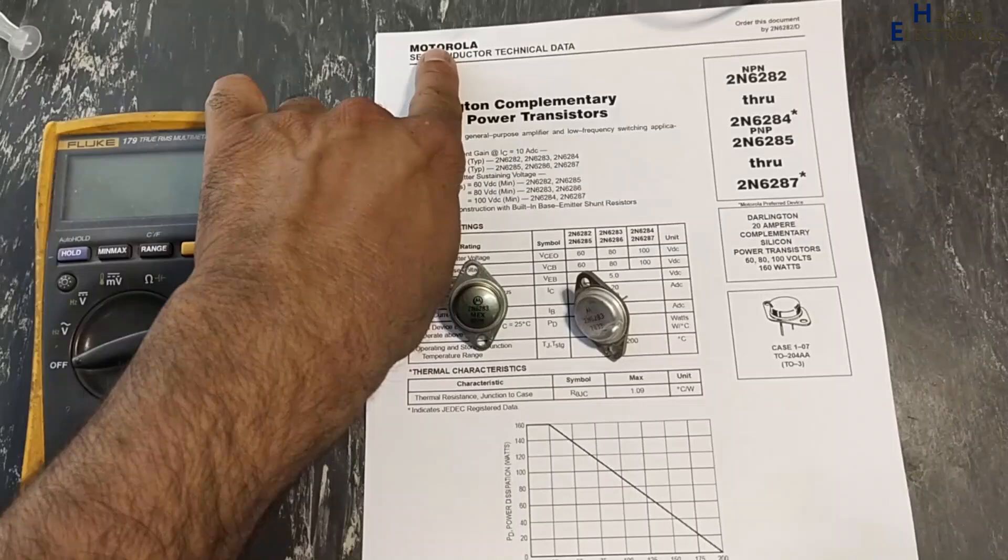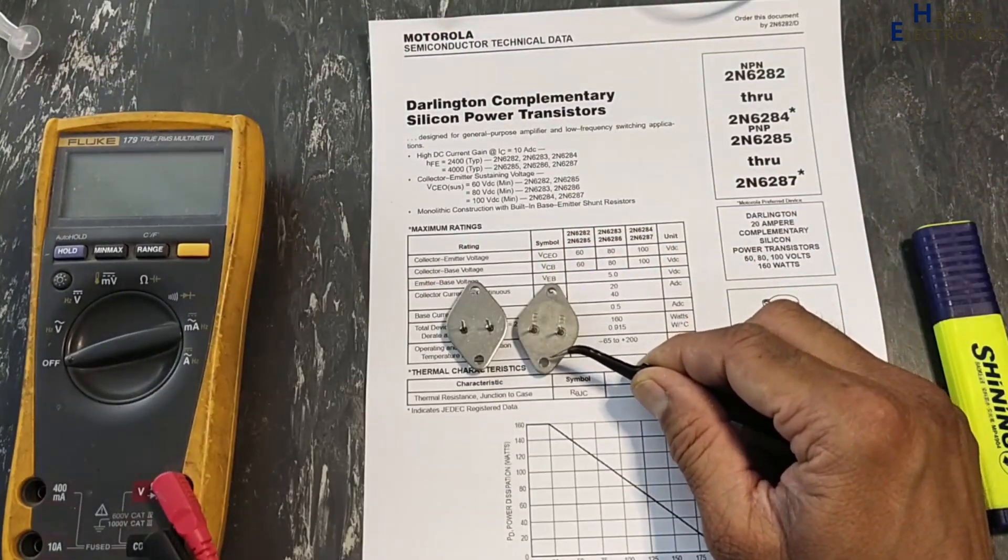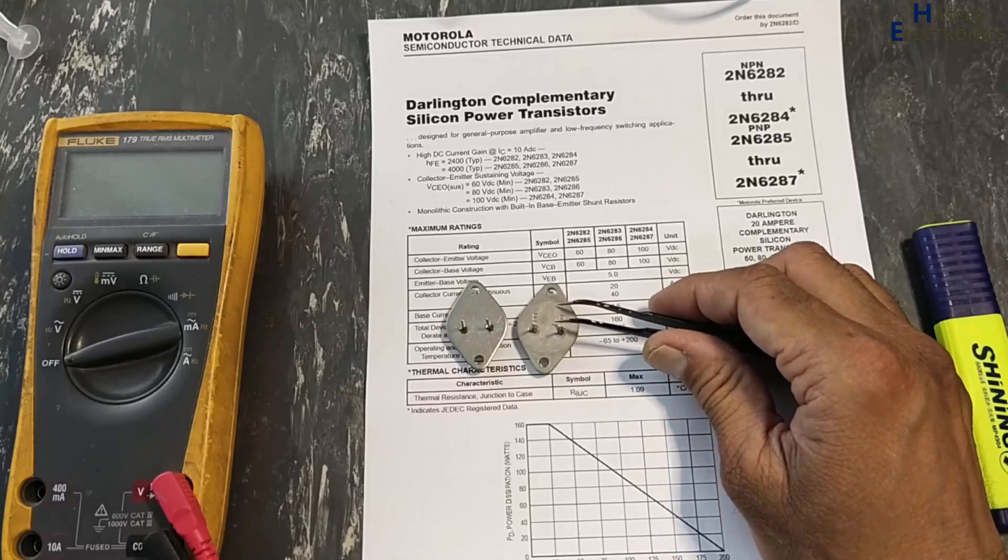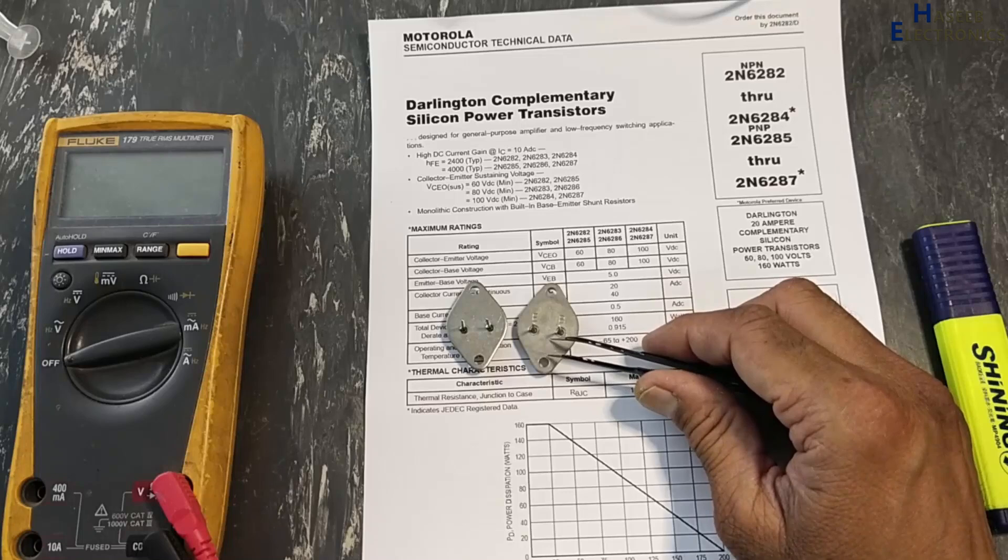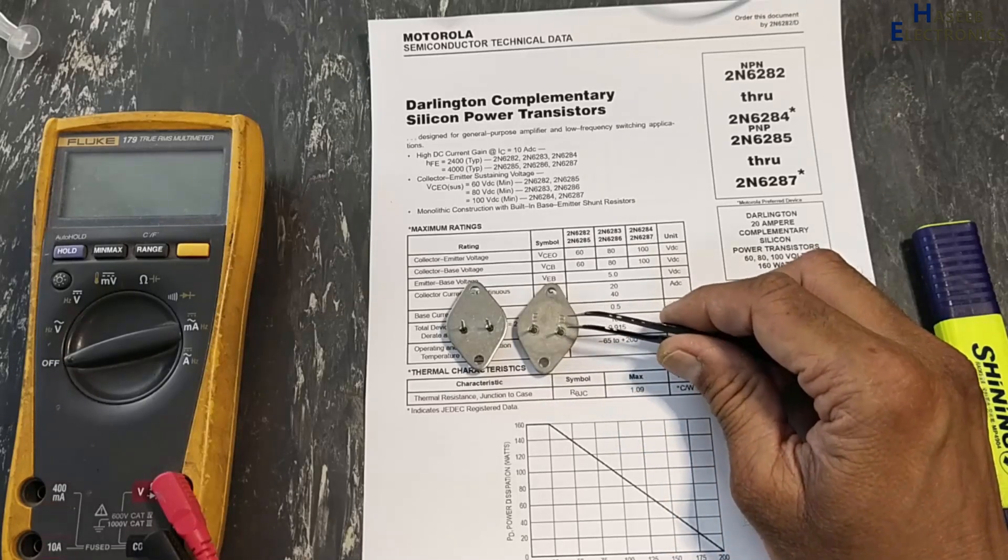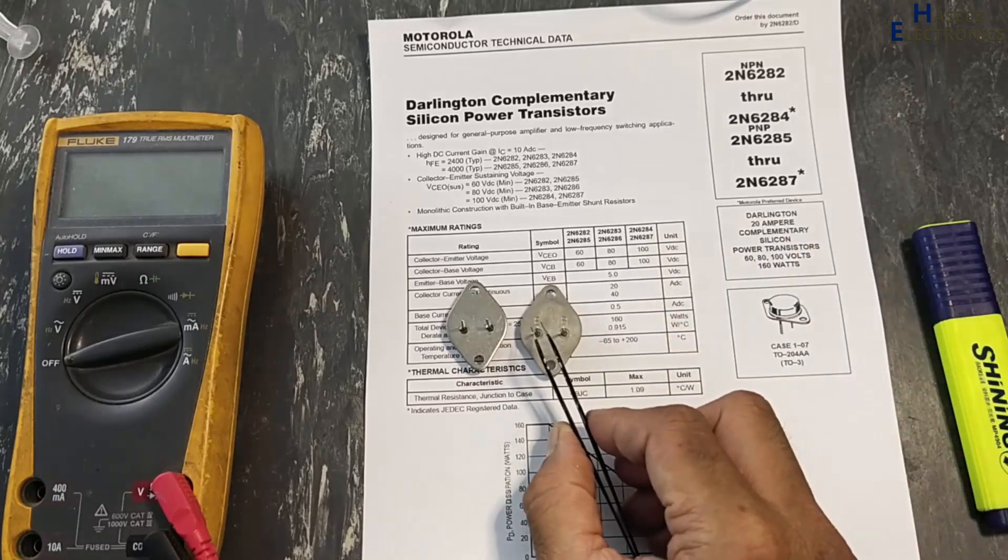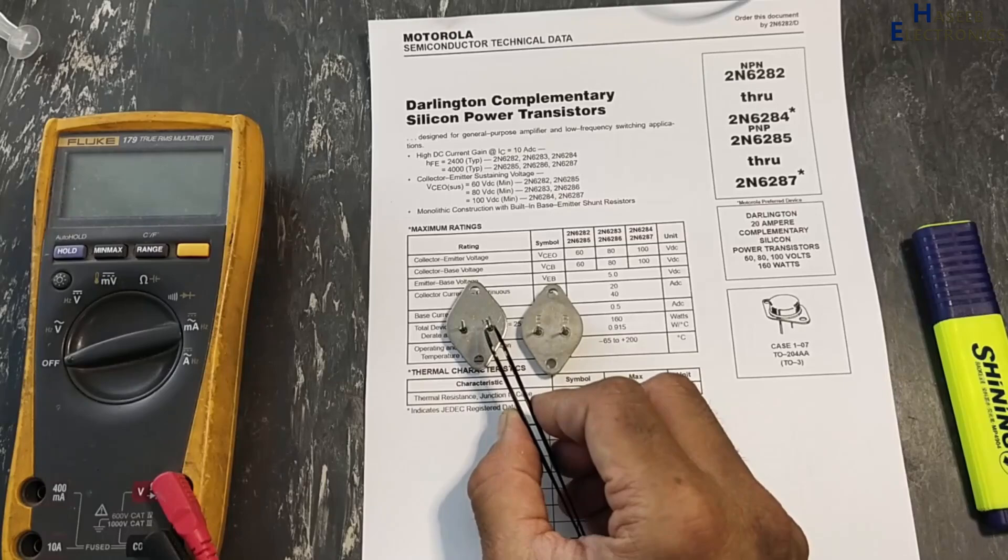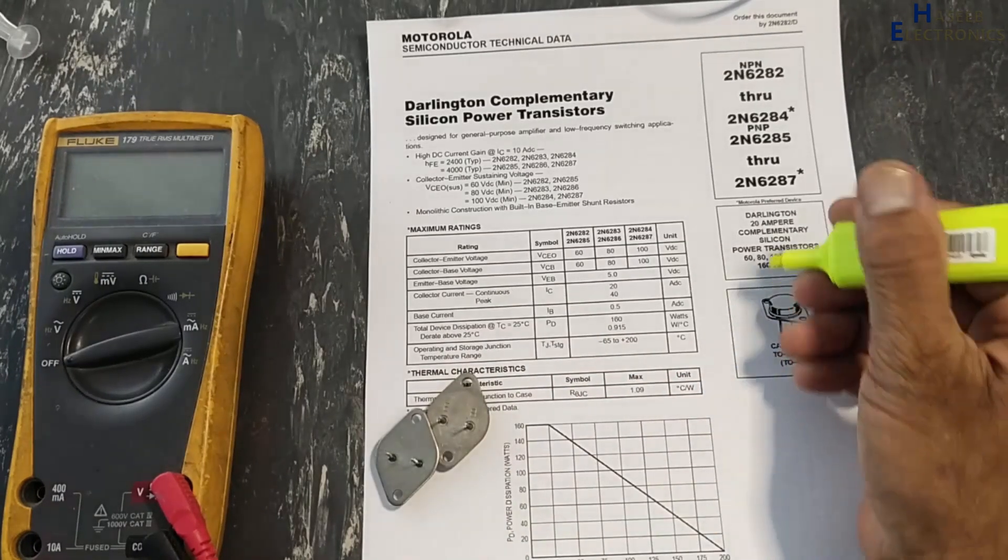If we place it this way, these pins are closer to this mounting hole and distance here is more than this one. So this closer distance, when it is on our side, right side pin is base, this pin is emitter, body is collector. Base, emitter, collector, 20 ampere.